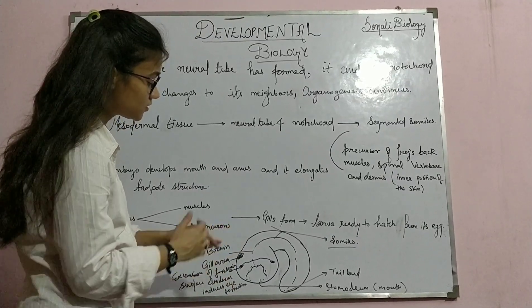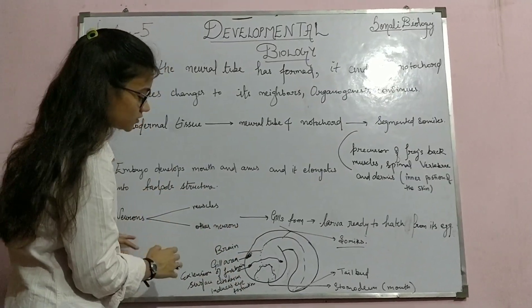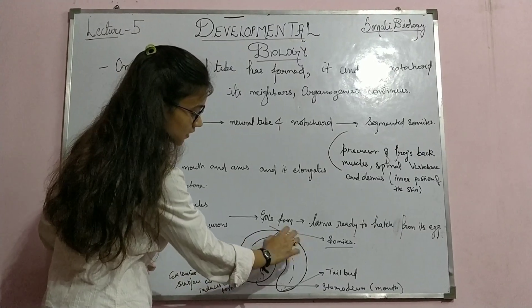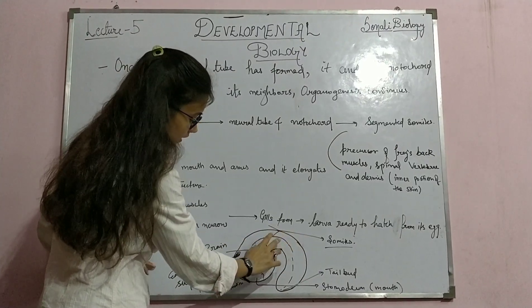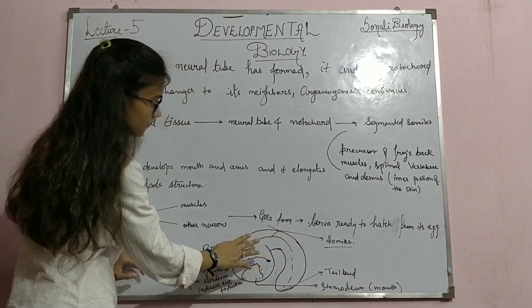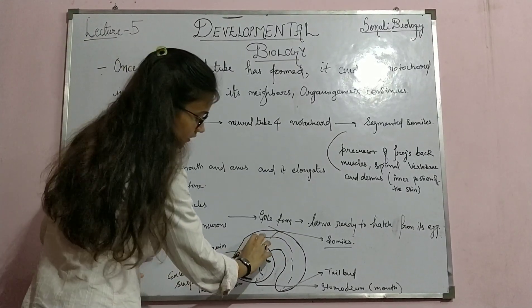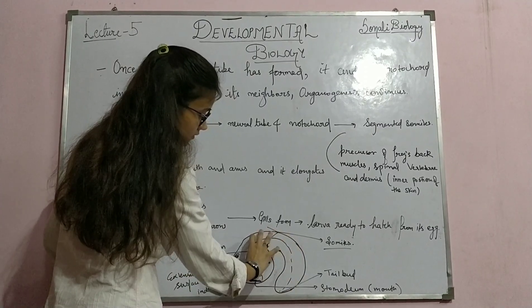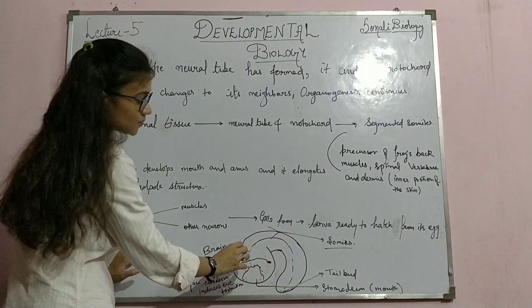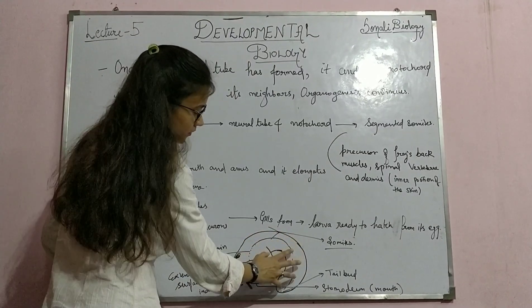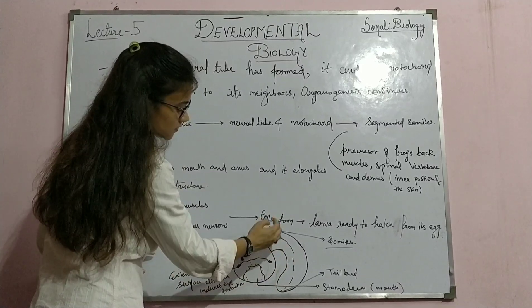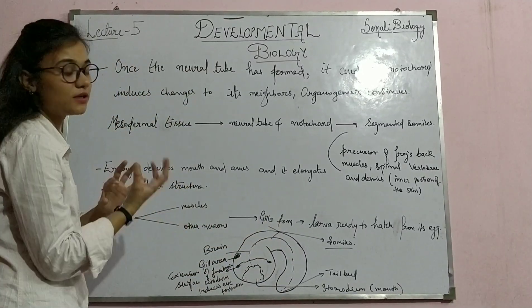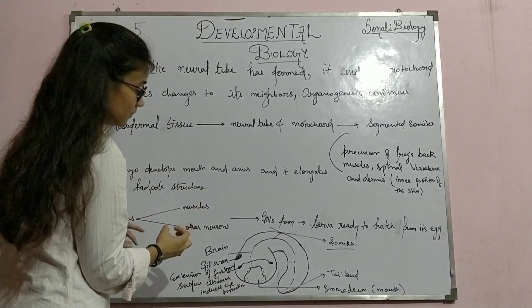This is the larval stage just before hatching. Here you can see the somites are present and they have already given rise to the larval back, the spinal and vertebrae portion, and the dermis which will be covering it from the inner side of the larva.